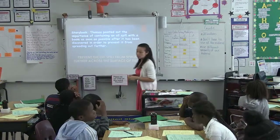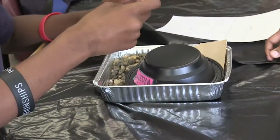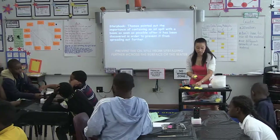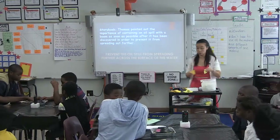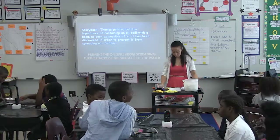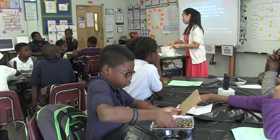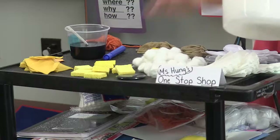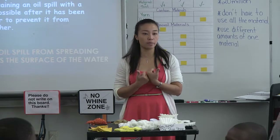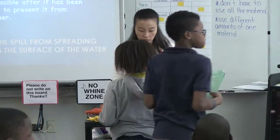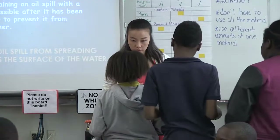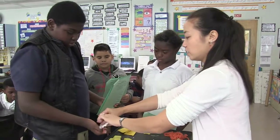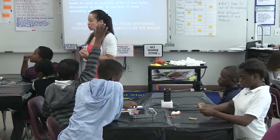I'm going to walk around and start handing out your models. One person from your group, go ahead and take out your green sheet. All the materials are up here for you. I'm going to select somebody from your group to come shopping at my store. You're going to decide based on what you wrote down how much of the materials you're going to grab. Whoever took out the green paper, come up here and bring your green paper to me and make one line.